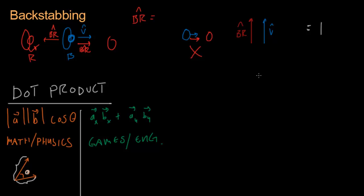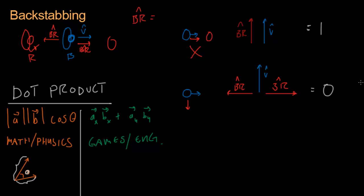As the blue vector and the red vector start to point in different directions, the dot product starts to become zero. The red vector points left or perpendicular — either of these values will get you the same result of zero. So here's our blue player facing this way, and the red player is 90 degrees to one side — standing beside the blue player and attacking. This is also not a backstab situation.